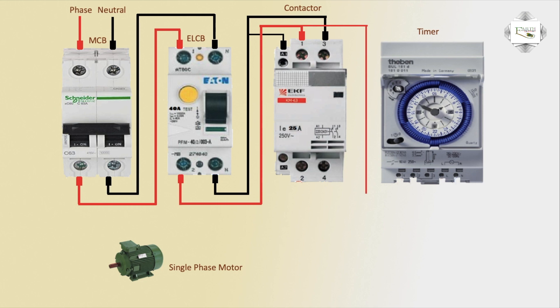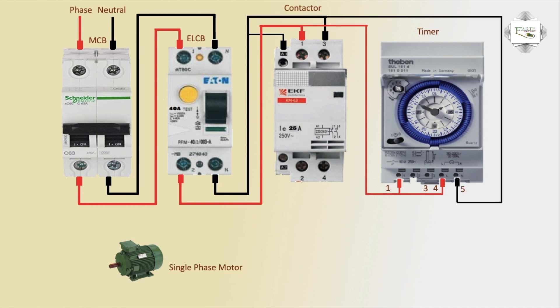Phase outlet, coil 1, timer circuit — 1-number pin connection or phone number pin connection. Timer coil terminal 4 or 5-number pin. 5-number pin neutral connection or 2-number outlet, magnetic contactor A2. A2 connection coil or 2-number pin outlet motor.